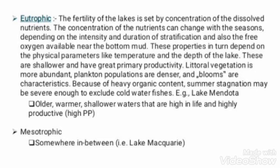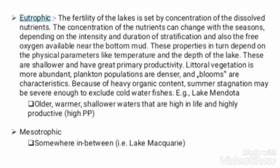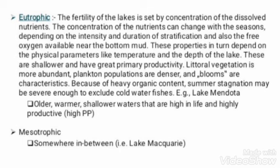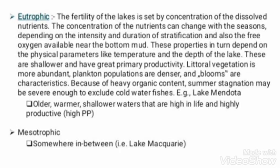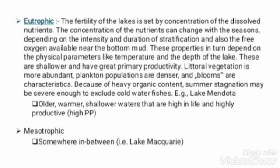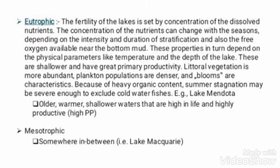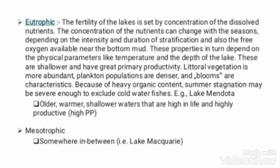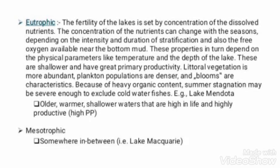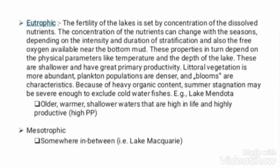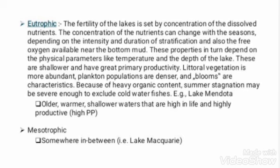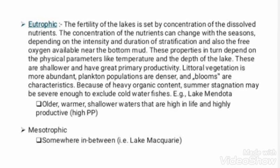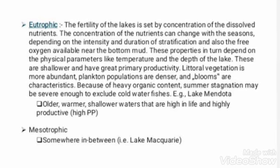The second trophic type is eutrophic. The fertility of these lakes is set by the concentration of dissolved nutrients, which can change with the season. Littoral vegetation is more evident, plankton populations are denser, and these are older, warmer, shallower waters that are high in life and highly productive. Mesotrophic lakes fall somewhere between oligotrophic and eutrophic types.